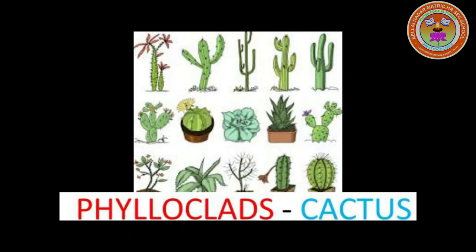Next one is phylloclade. These are leaves modified into scales or spines to check transpiration, done by controlling the growth of the leaves. These are fleshy, green, and take part in photosynthesis. This modification is seen in xerophytic plants and they store water. Example: Opuntia. It consists of fleshy internodes and the leaves are modified into spines or small scaly leaves. Example: Cactus.